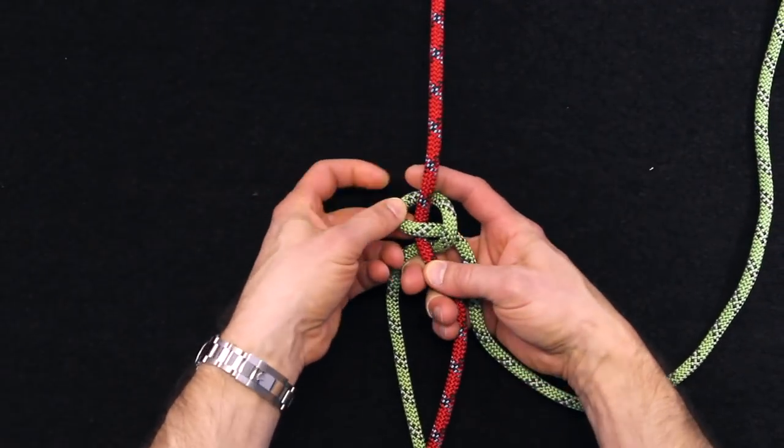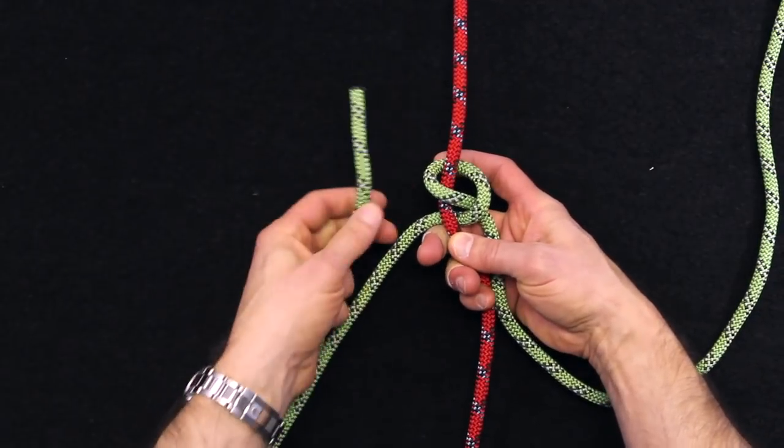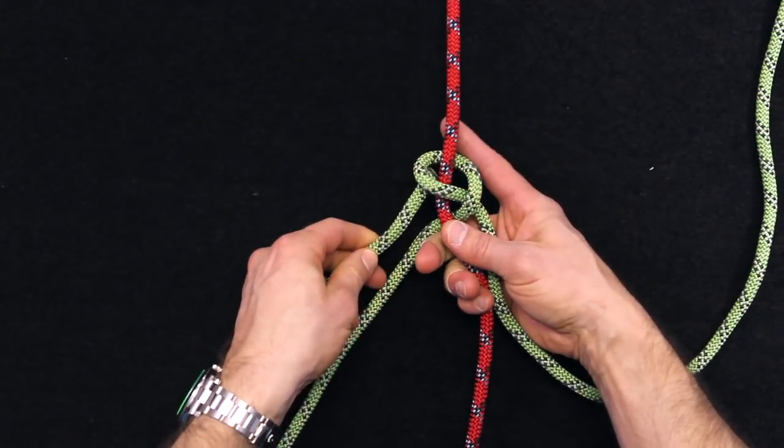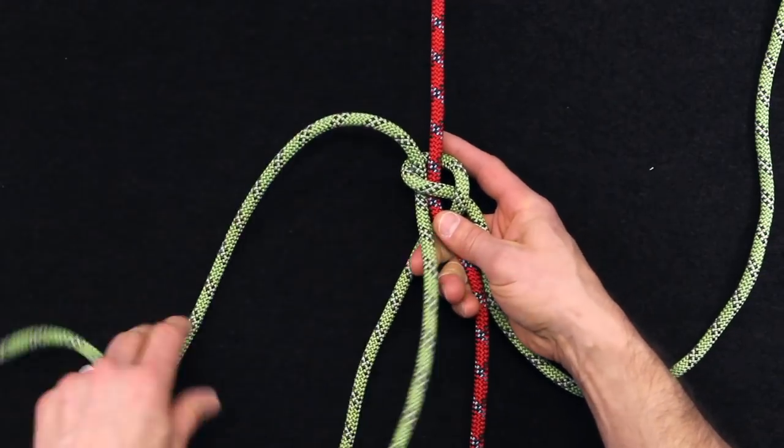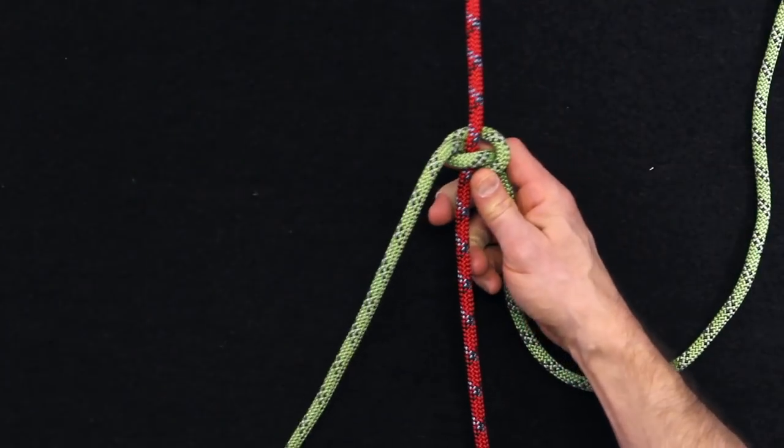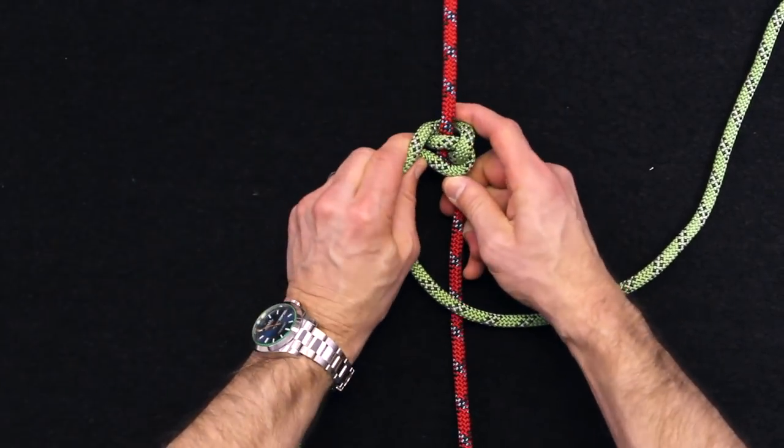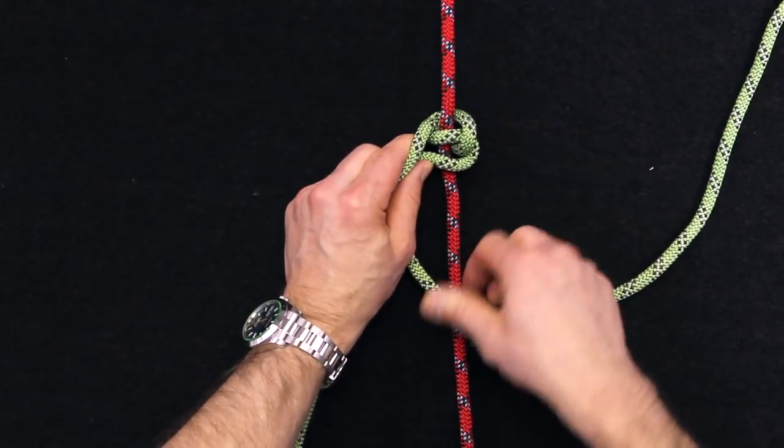And then I will leave a little space here and I'm actually going to take this working end and come right through the leftmost side of this. So it'll look something like this. So then I'm going to tighten and I'll bring this around. So I'm going to take this right side and I'm going to make a bite with that.